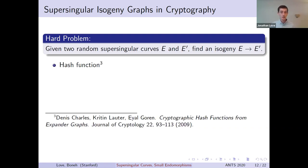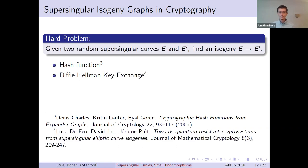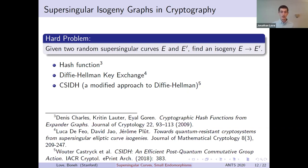There is a hash function due to Charles, Lauter, and Goren, a Diffie-Hellman key exchange due to De Feo, Jao, and Plût, a commutative supersingular isogeny Diffie-Hellman due to Castryck-Lange, Martindale, Panny, and Renes, and many, many others.